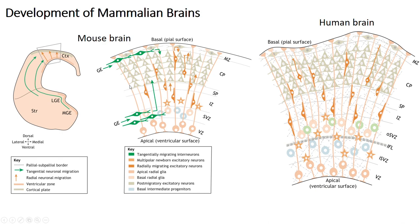Interestingly, the lowest layers of the cortex get organized first, and then the upper layers do. And as these cells migrate, they make connections with each other to form the brain that we are used to. This is just the difference between a mouse brain and a human brain, showing that the same processes operate. This process of migration is facilitated by glial cells, which are the cells that support the brain cells, and the brain cells migrate along them to their surface.